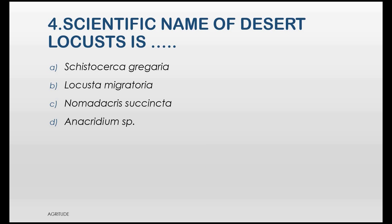Let's move into next question. Okay, here is the next question for you awesome viewers. Scientific name of desert locusts is A. Cystocerca gregaria, B. Locusta migratoria, C. Nomadacris succinata, D. Anacardium species. Try to answer this.